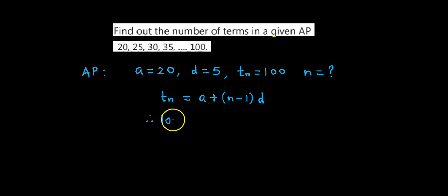Therefore, 100 is equal to 20 plus (n minus 1) into 5. Now we subtract 20 from 100, so we have 100 minus 20 is equal to 5 times (n minus 1).